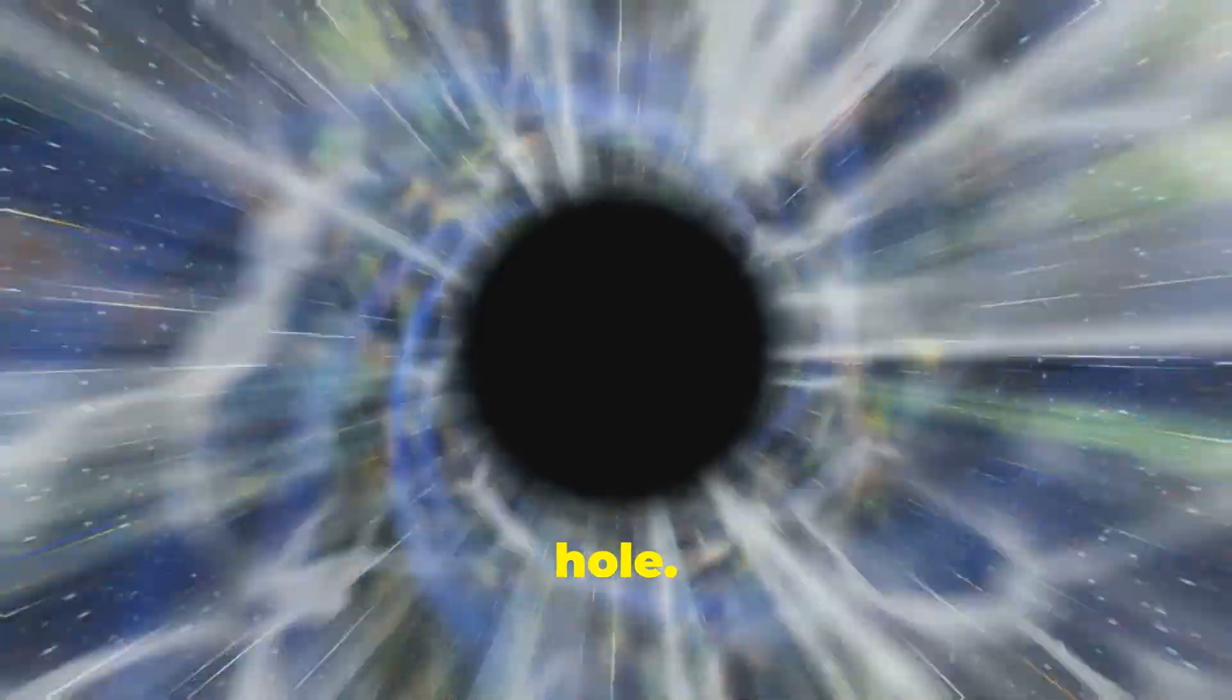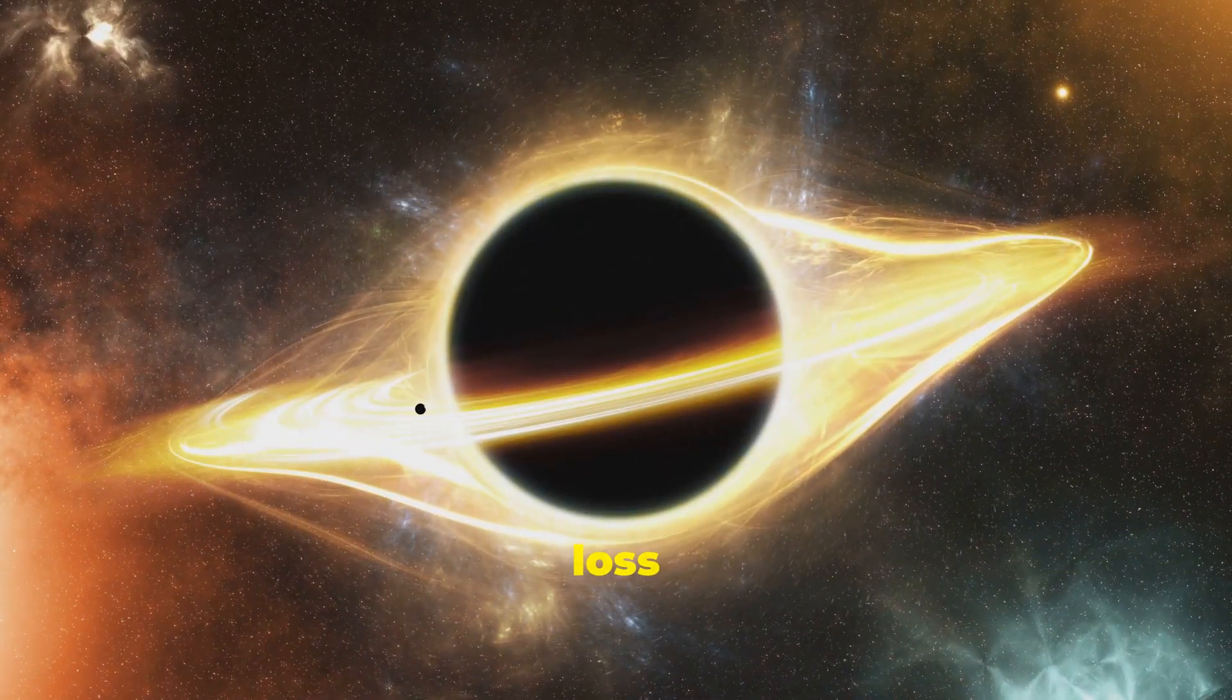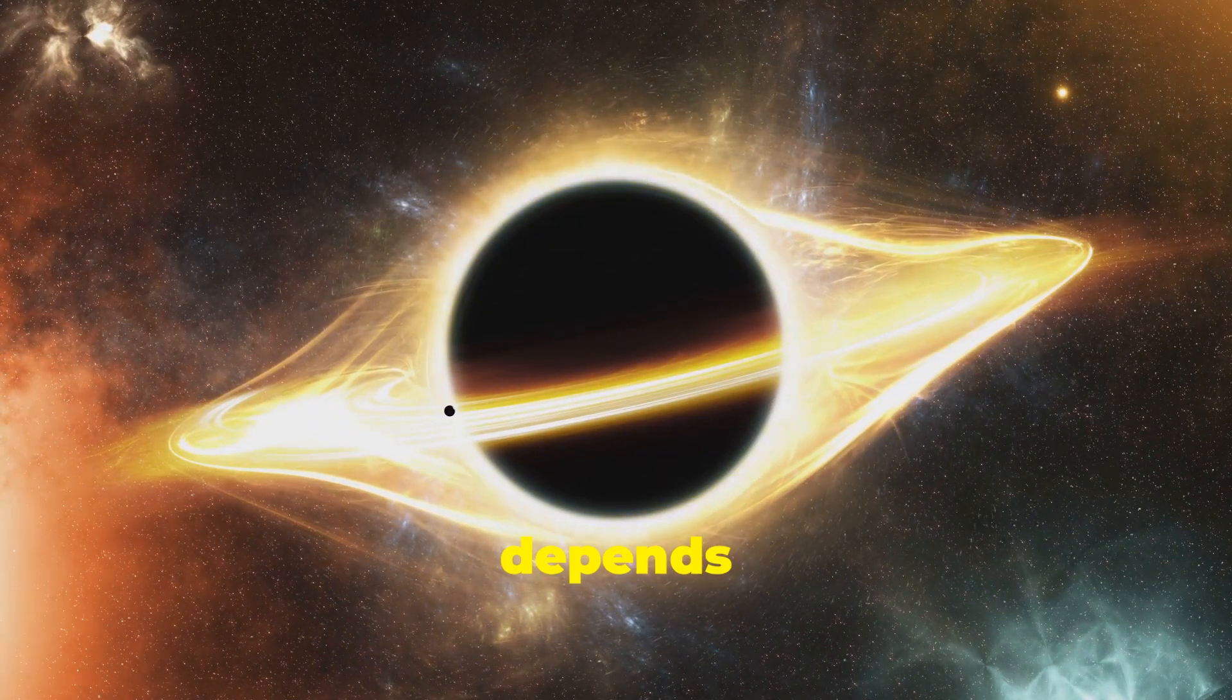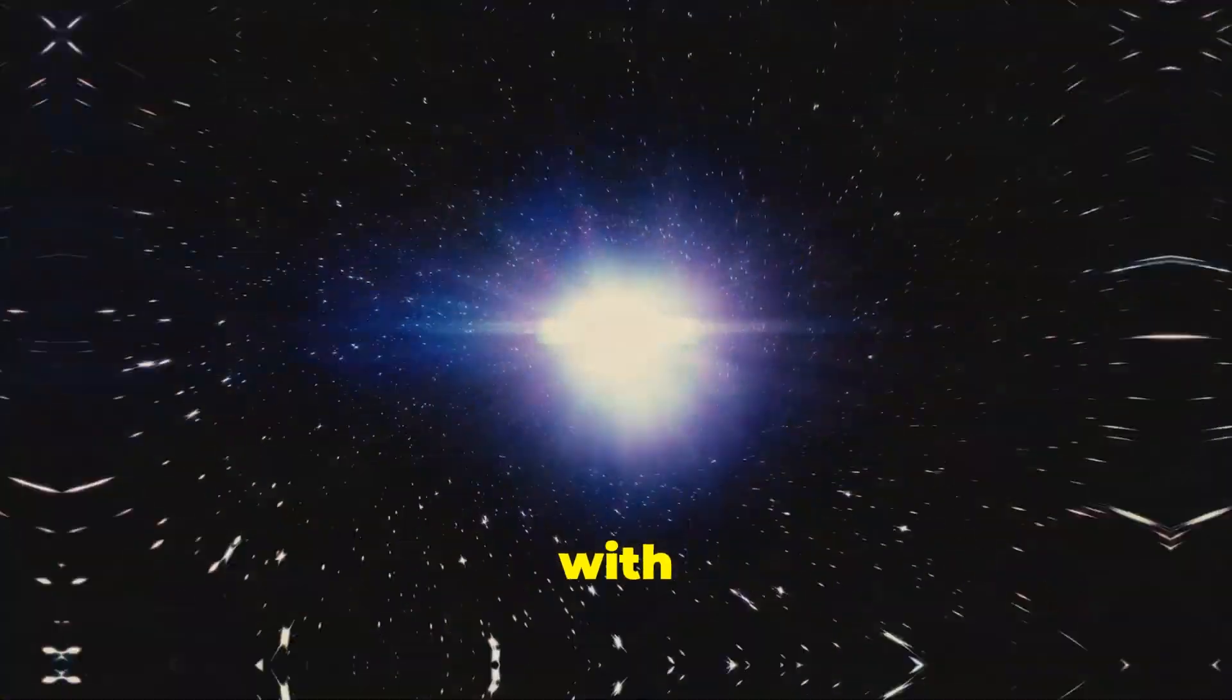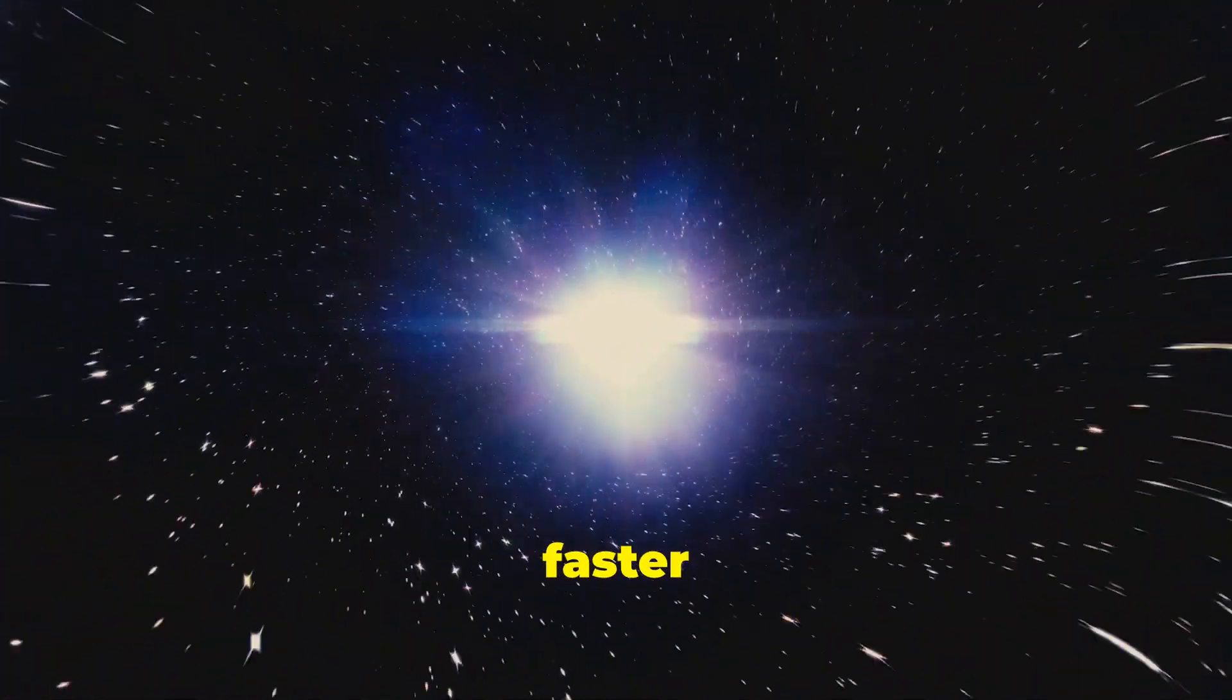This equation tells us that the Hawking temperature is inversely proportional to the mass of the black hole. Moreover, the rate of mass loss due to Hawking radiation depends on the black hole's mass, with smaller black holes evaporating faster than larger ones.